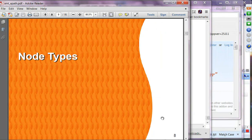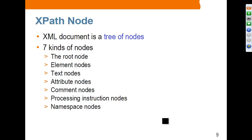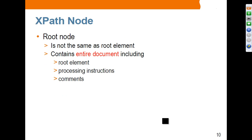The next topic is node types. An XML document is made of a tree of nodes and there are seven kinds: root node, element nodes, text nodes, attribute nodes, comment nodes, processing instruction nodes, and namespace nodes. The root node is not the same as the root element. The root node covers everything including the root element, processing instructions, and comments, while the root element is simply the first element inside your XML document.